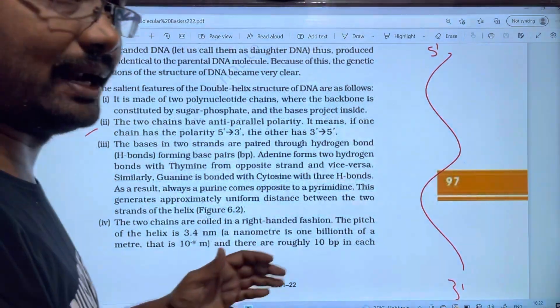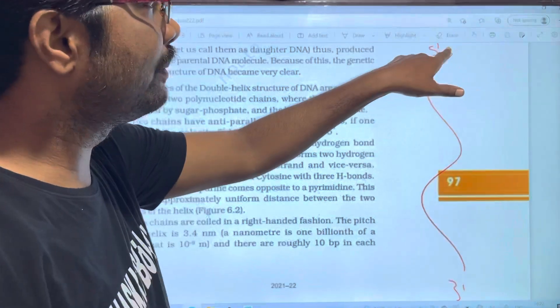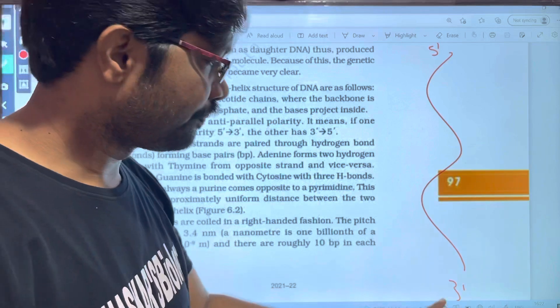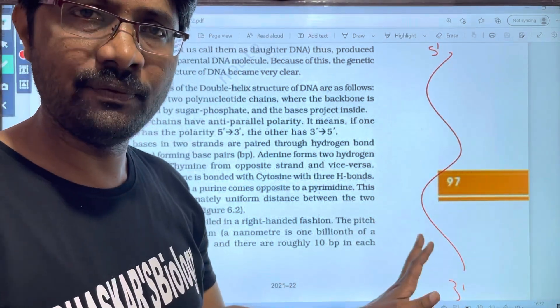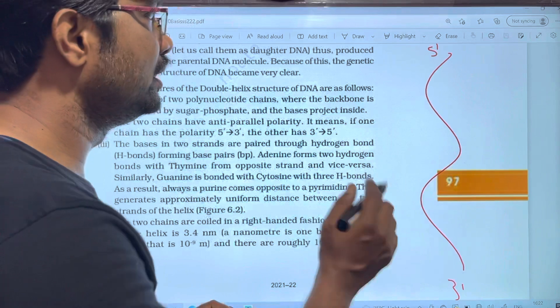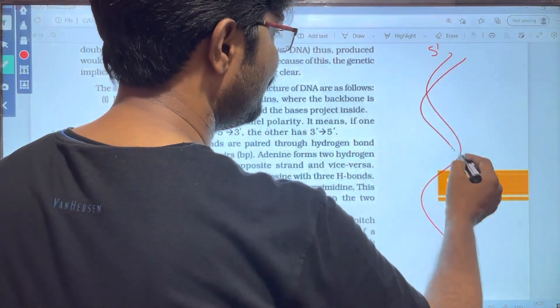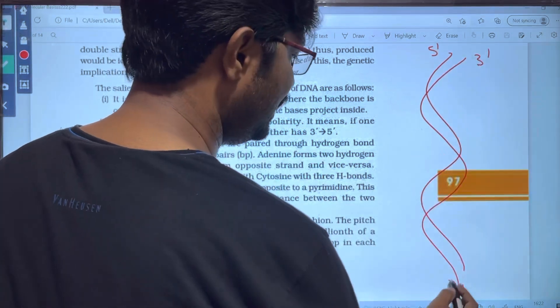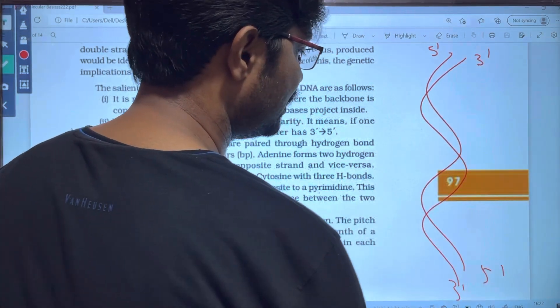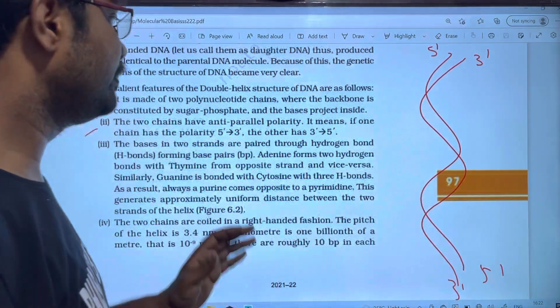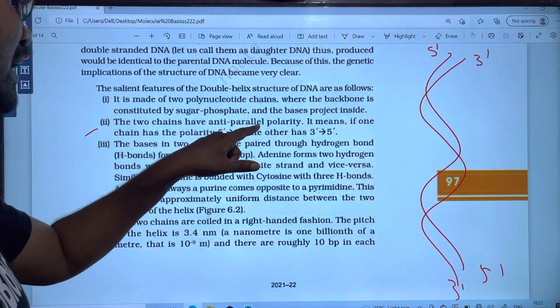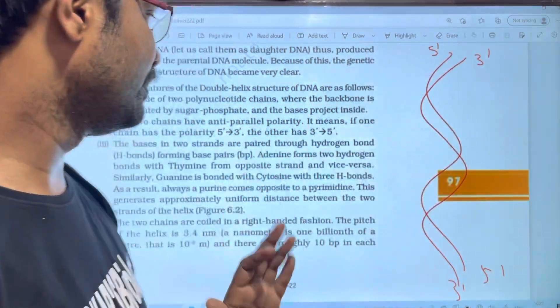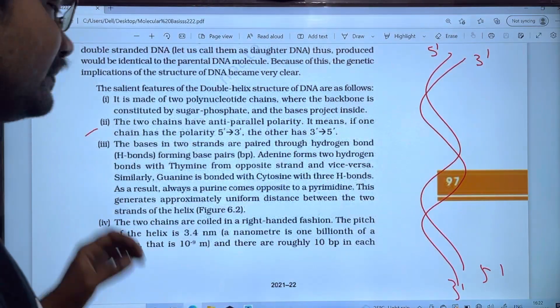This is the 5' to 3' form. The 5' end has the phosphate group, and this is the third carbon group. This is the complement strand. The two strands are anti-parallel. This is 3' to 5'. This is the second point.